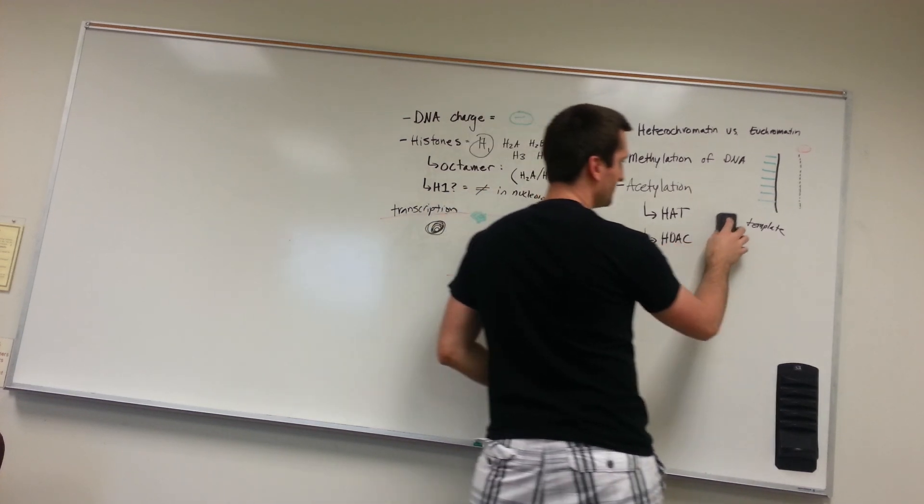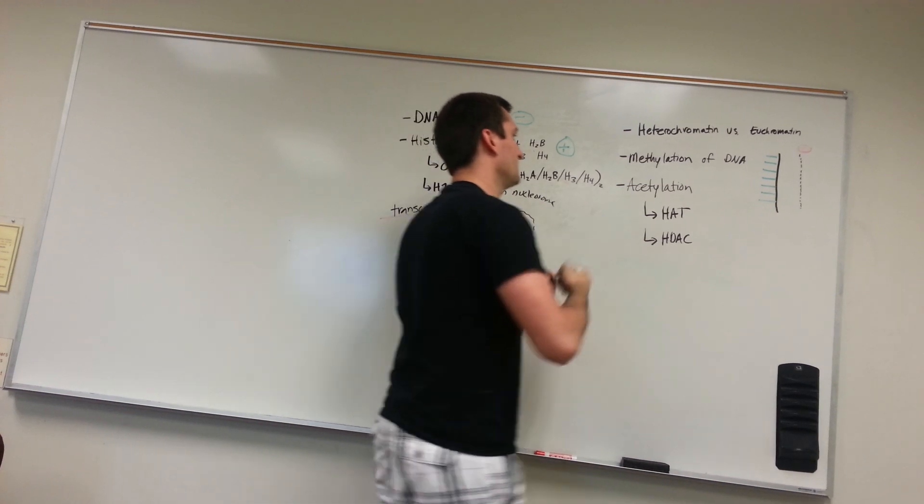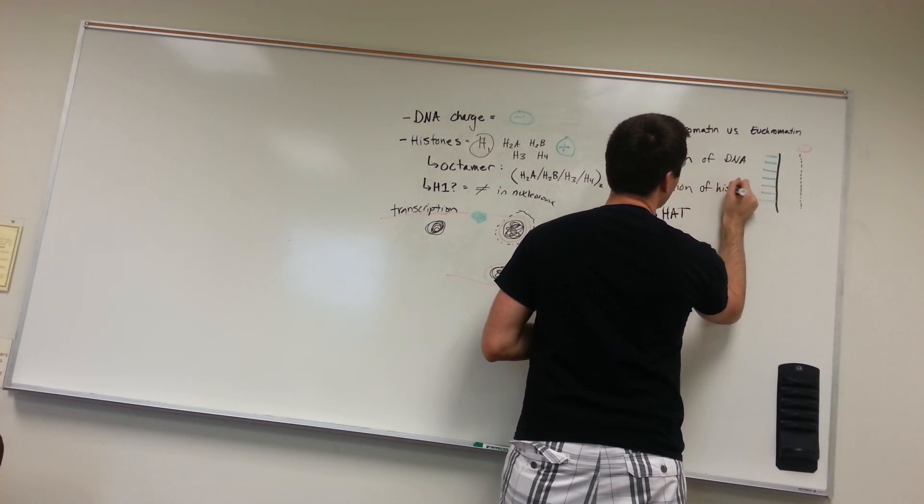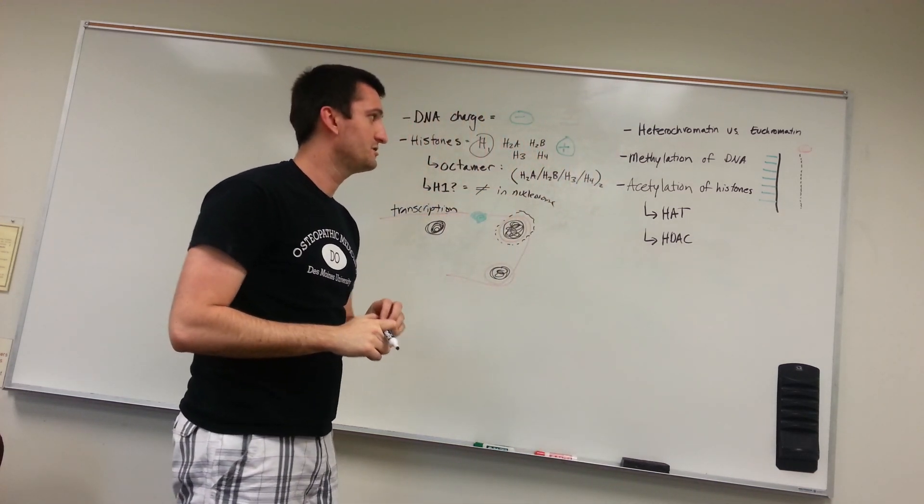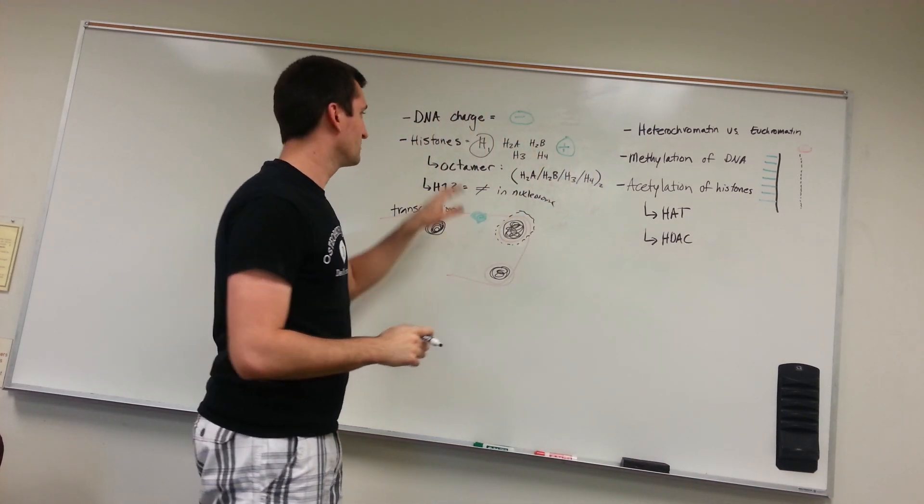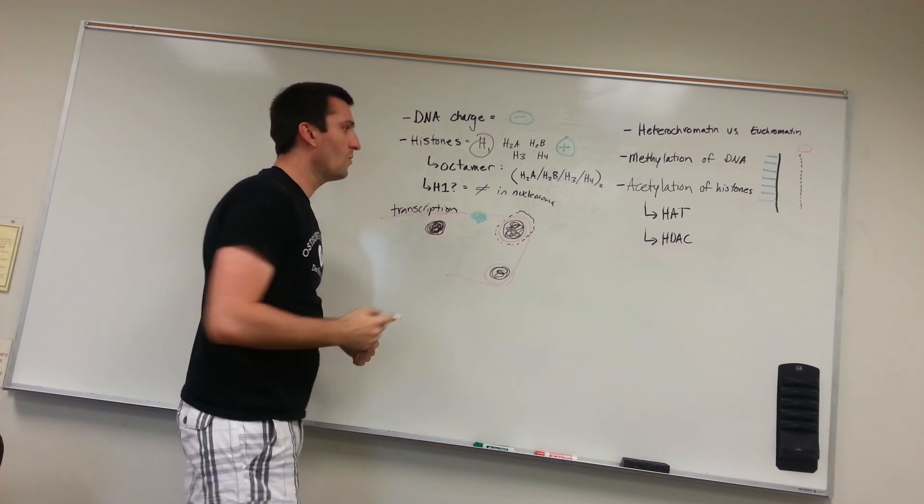Now let's talk about acetylation. Acetylation is going to be of histones. Methylation is primarily DNA. Acetylation, we're thinking histones. So we're going back to our protein histone octamers. What happens here?